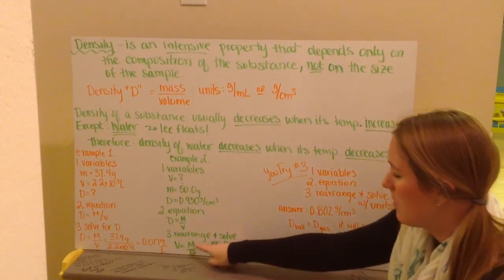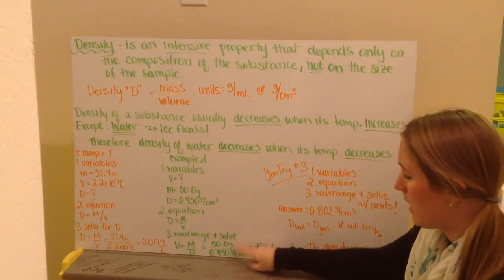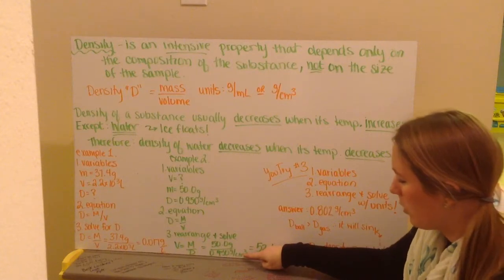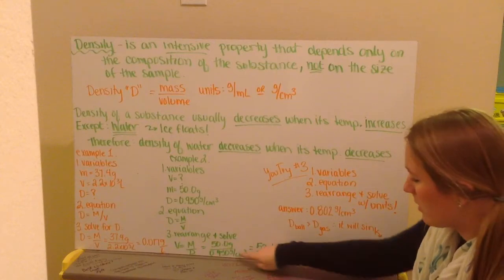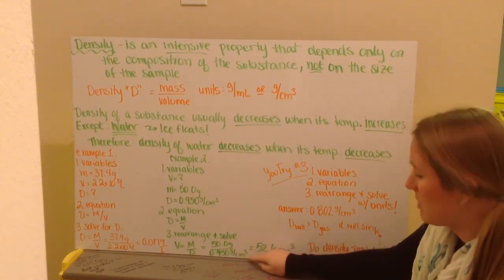I plug in my variables. My mass of 50.0 grams. My density of 0.950 grams per centimeters cubed. My grams cancels out.